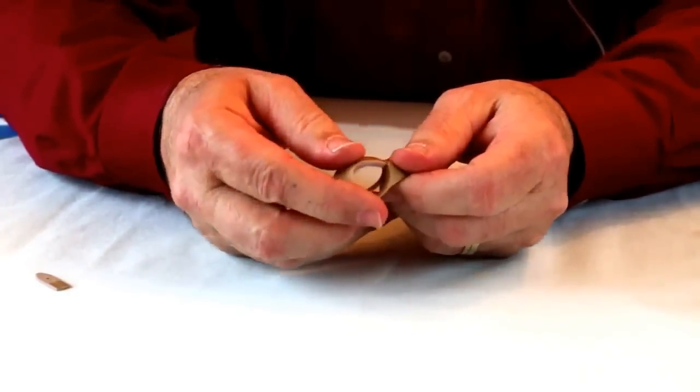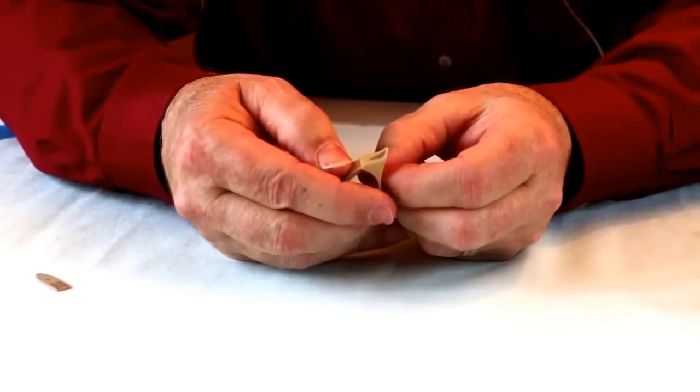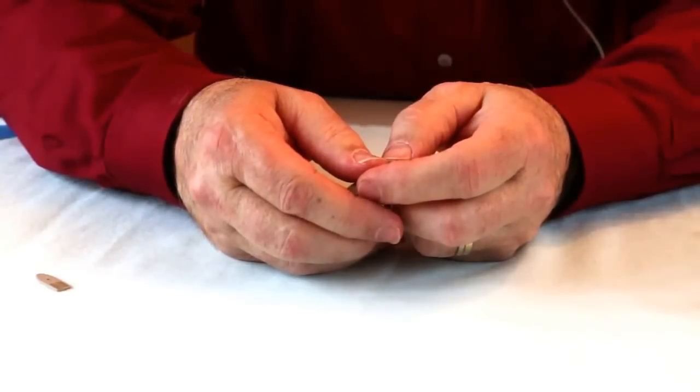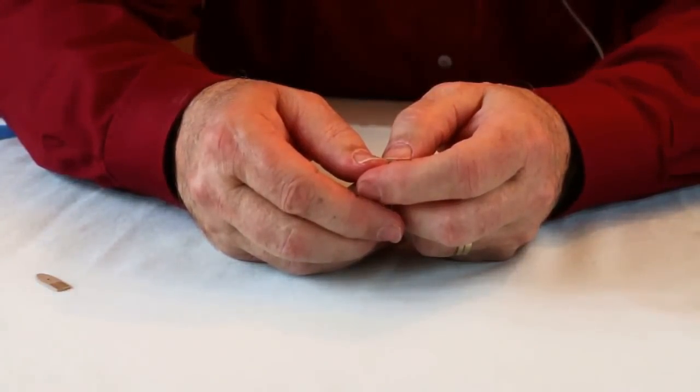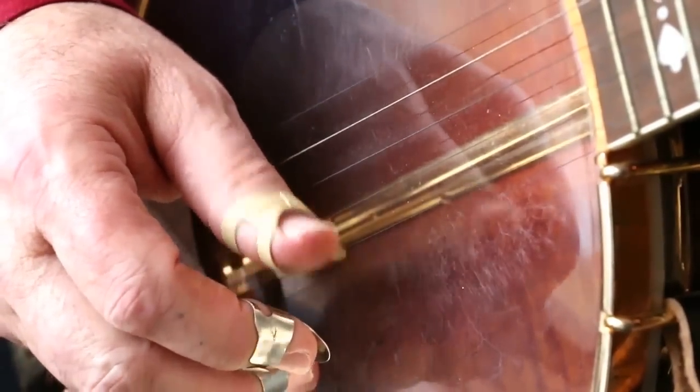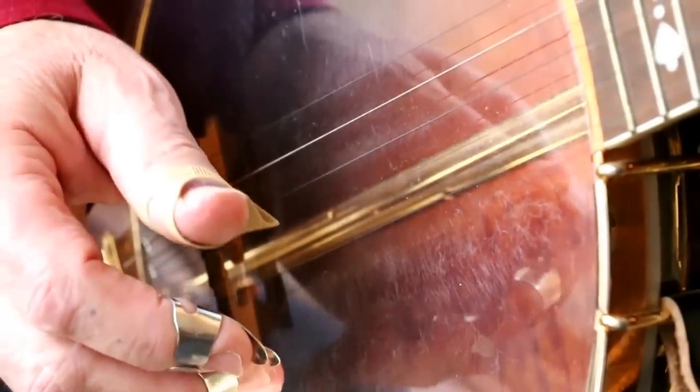The interesting thing about this pick that no other pick has is that it will not come off on the backstroke and I'd like to demonstrate to you on the banjo how you can actually play on the backstroke. I like to kick off Cripple Creek by coming up on the upstroke and then hitting the G string on the way down.